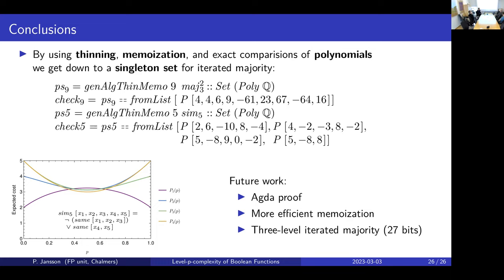Three-level iterated majority might be reachable because of the symmetries mentioned. Currently the algorithm doesn't really know anything about the function's mathematical properties — it uses thinning, exact comparison, and memoization, but no clever mathematics on the polynomials themselves. It just computes.